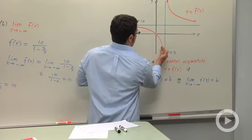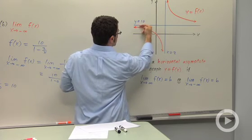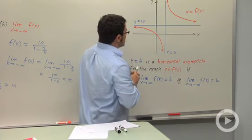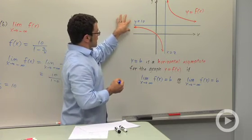And the same thing as x approaches negative infinity, the values are approaching 10. They're approaching from below, but they're still headed towards this number 10. And so both of those limits indicate that y equals 10 is a horizontal asymptote.